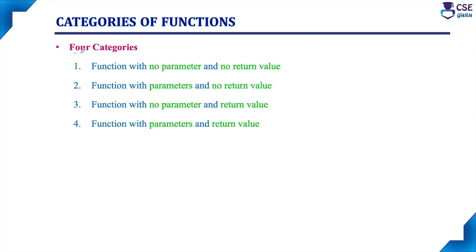There are four different categories of function based on two factors. The first factor is whether we are going to pass any parameter from the calling function to the called function or not, and the second factor is whether the called function is going to return a value to the calling function or not. Based on these two factors, there are four different categories of function.